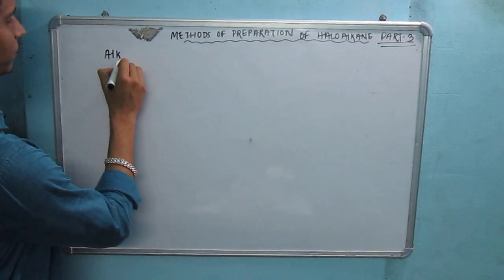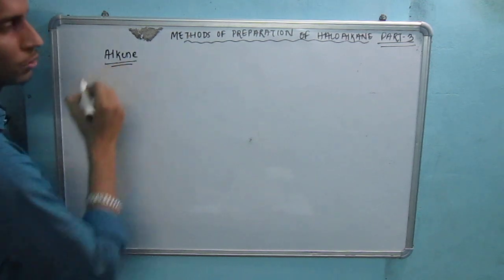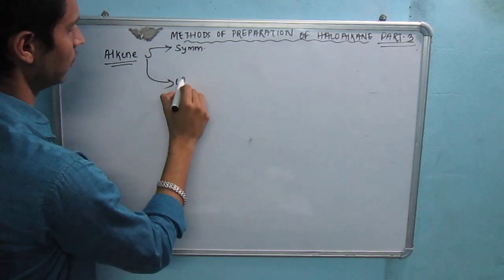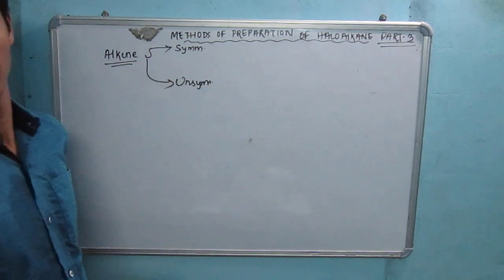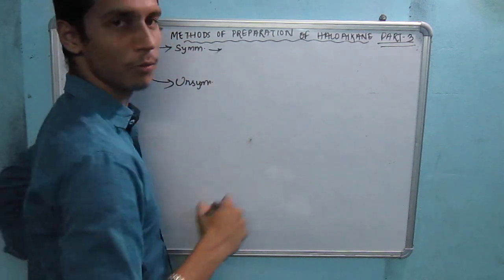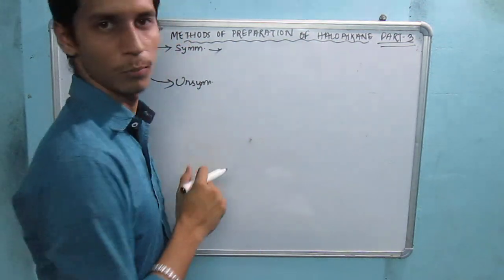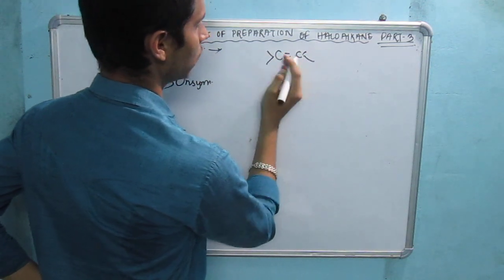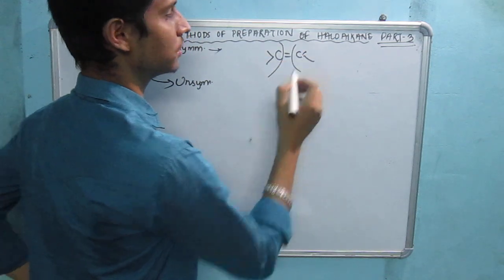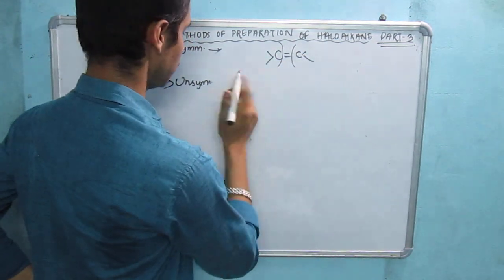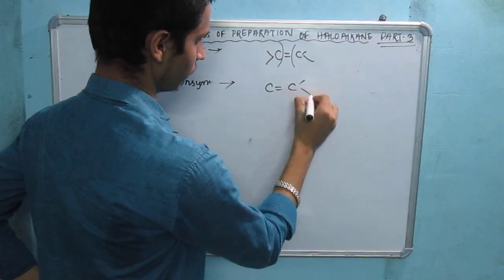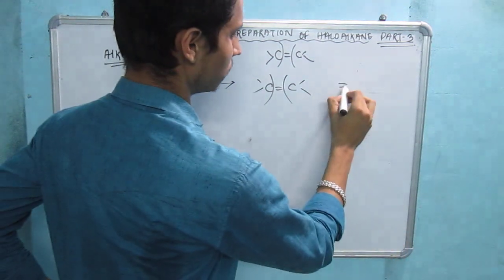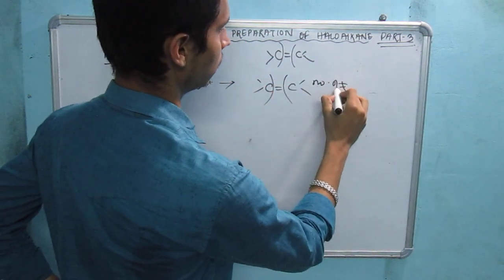Alkene is of two types: symmetrical alkene and unsymmetrical alkene. Symmetrical alkene is one where the number of carbons on both sides of the double bond is the same — C double bond C. Unsymmetrical alkene is one where the number of carbons on each side of the double bond is not equal.